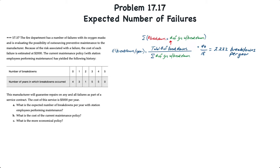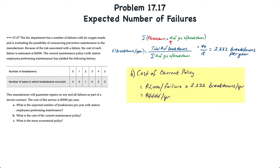For requirement B, the cost of the current policy is $2,000 per failure times the estimated 2.222 breakdowns per year, which results in an estimated cost of $4,444 per year under the current policy.